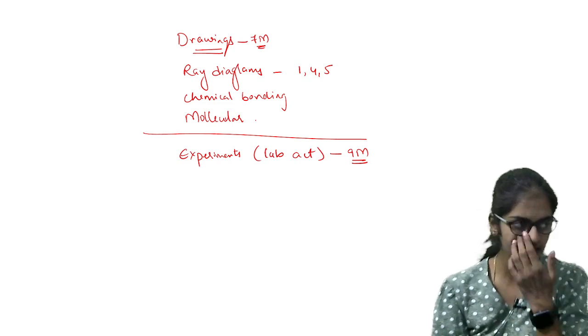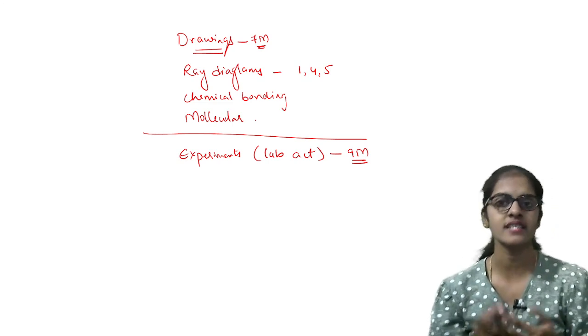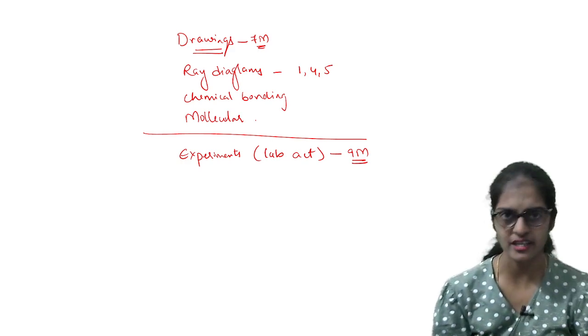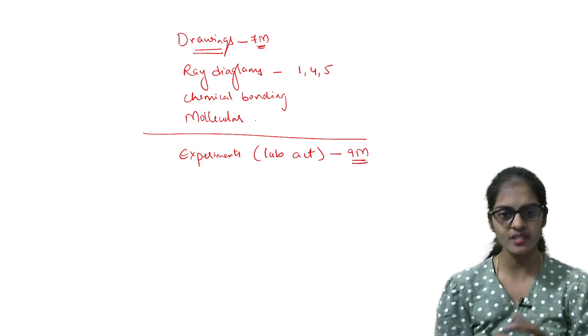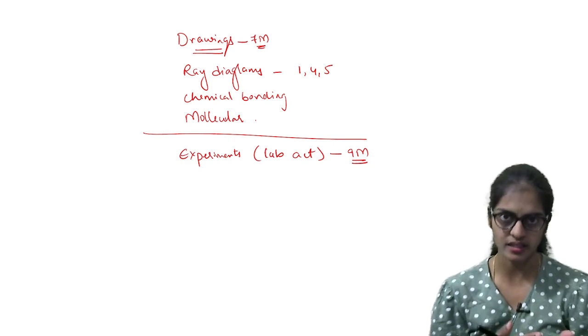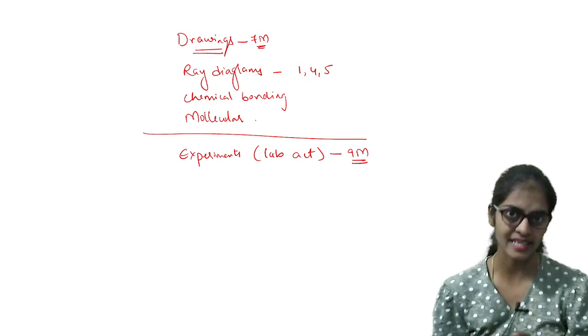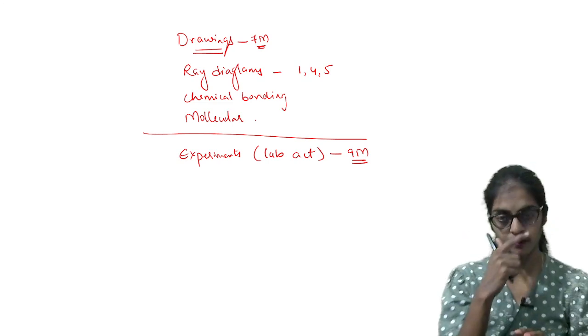So how they will ask them? In very short, they will ask you what is the experimental setup. Suppose Zn and HCl reaction, that experiment is a lab activity. So they will ask you what is the apparatus used in that. So that will be for two marks. Or they may ask you what happens when Zn reacts with HCl. So that is for one mark, part B.